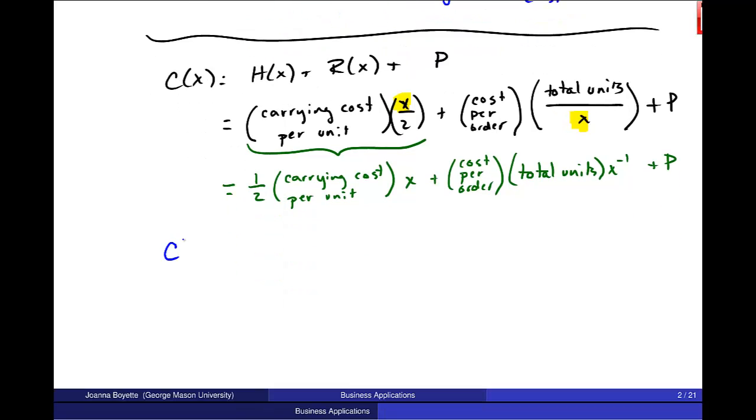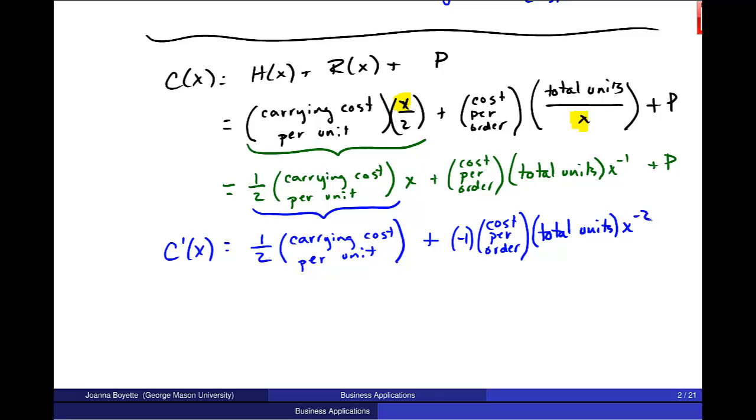So let's go through here, C'(x). When I take the derivative of this, this is x to the first power. I just get left with this piece, which is really the coefficient, 1/2 times whatever this number is, carrying cost per unit. And we saw in the last example that's a number. Plus, let's do this derivative. This negative one comes out front. Cost per order is a constant multiplier. Total units is a constant multiplier, and x to the minus 2. P is a constant and it drops off.